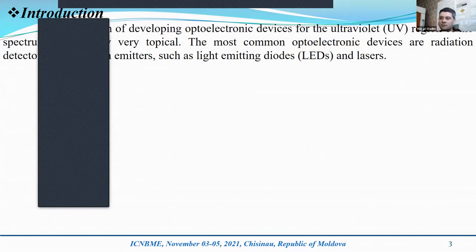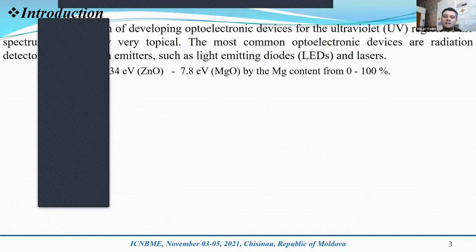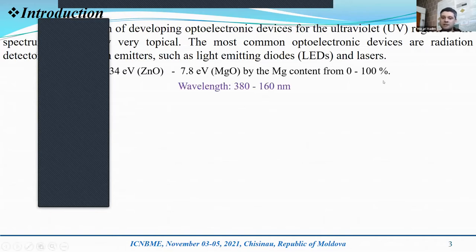Available materials for such devices are zinc oxide. By introducing the concentration of magnesium in zinc oxide from 0 to 100%, it might be possible to obtain a ternary zinc-magnesium oxide alloy with a wider band gap. The short wavelength range can change from 380 to 160 nanometers.